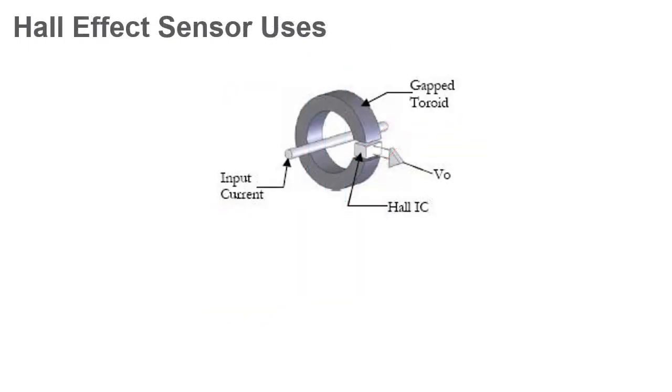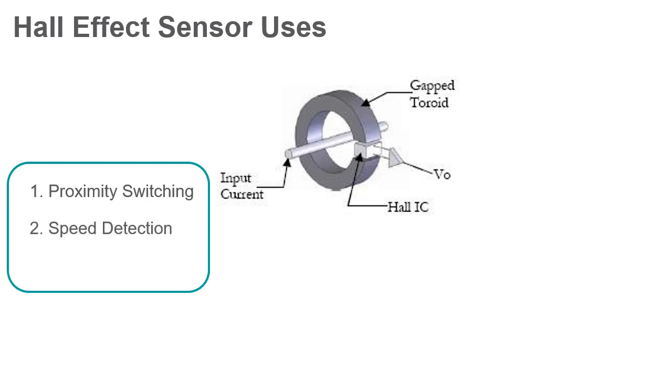Hall effect sensors are commonly used for proximity switching, speed detection, and position sensing. Hall effect sensors are important as they act as an analog transducer which then returns a voltage.